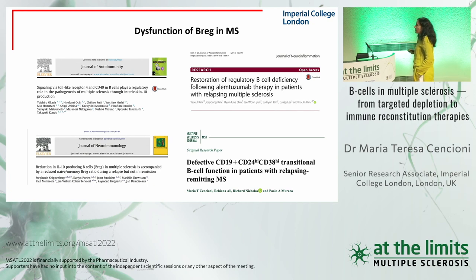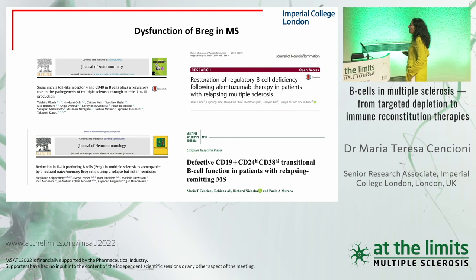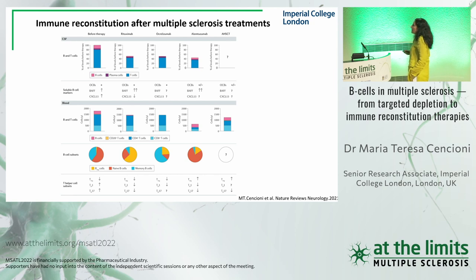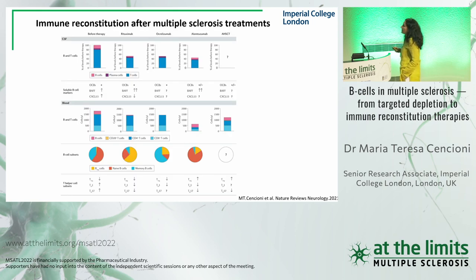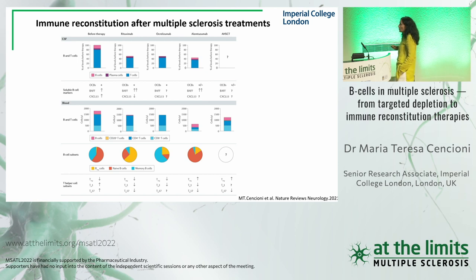Not only is there a reduction of interleukin-10 in patients during relapse compared to remission, but our group demonstrated that transitional Bregs in relapsing-remitting patients are unable to suppress CD3-activated cells in releasing interferon. Considering the important role of B cells in MS, several therapies started as treatment targeting B cells, like rituximab and ocrelizumab, or indirectly B and T cells like alemtuzumab. Several publications are also investigating the immune reconstitution of B cells during these treatments.